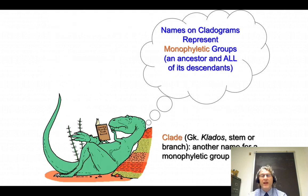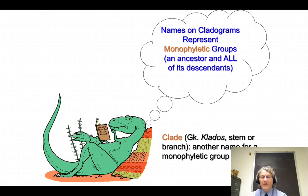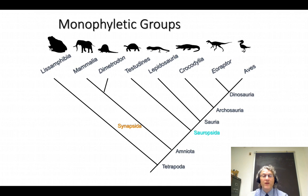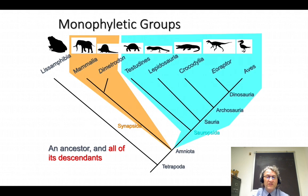There's a special aspect about names on the cladogram — this is one of the big shifts in taxonomy due to cladistics — and that is to use only monophyletic groups. Monophyletic means 'single branch': a name on a cladogram represents an ancestor and all of its descendants. A synonym for a monophyletic group is a clade, from the Greek word klados meaning stem or branch. In modern taxonomy we use only monophyletic groups — Synapsida, for instance, is monophyletic: an ancestor and all descendants including mammals and Dimetrodon.